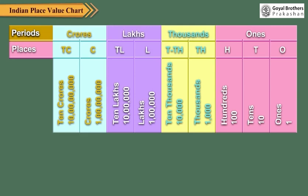From the right, the first three places form the Ones period. The next two places form the Thousands period. The next two places form the Lakhs period, and the next two places form the Crores period.